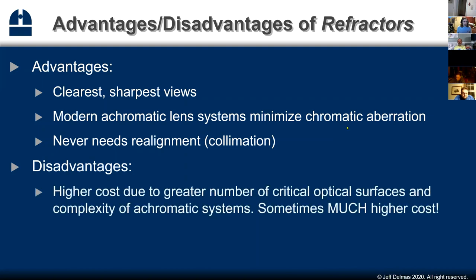The main disadvantage of refractors is cost. Because of the number of critical optical surfaces — a mirror has one optical surface, but a lens has two optical surfaces that have to be constructed perfectly relative to each other. To have an achromatic lens, it's really a system of lenses — multiple pieces of glass, often made of different materials — and manufacturing them is very expensive.